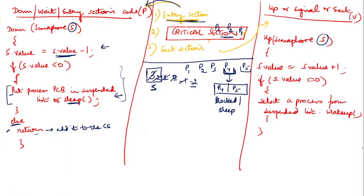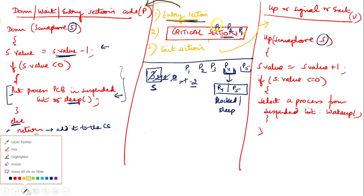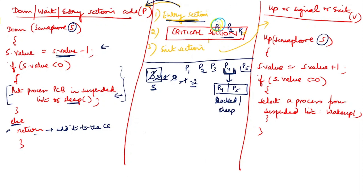Now suppose P3 has completed its execution and wants to exit the critical section. It implements the exit system call — the up/signal code. Currently the semaphore value is minus 2 and there are two processes in the blocked state. When P3 exits, it increments the semaphore value to minus 1. It checks if minus 1 is less than or equal to 0 — yes.